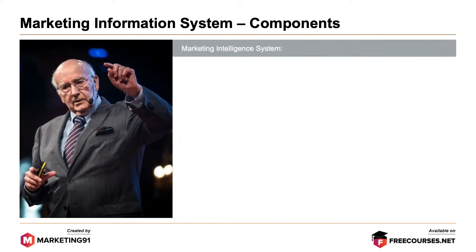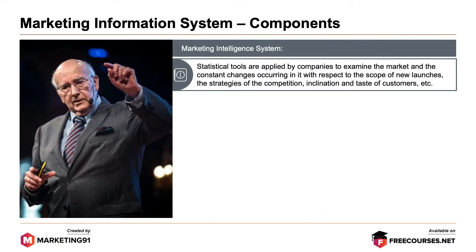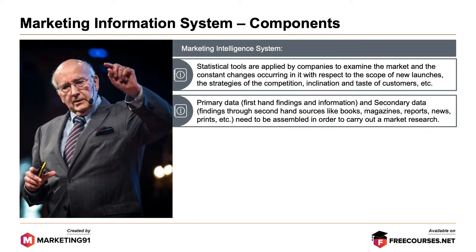Third, marketing intelligence system. Statistical tools are applied by the companies to examine the market and the constant changes occurring in it with respect to the scope of new launches, the strategies of the competition, and inclination and taste of customers. Primary data as in the first-hand findings information and secondary data finding through second-hand resources need to be assembled in order to carry out market research.